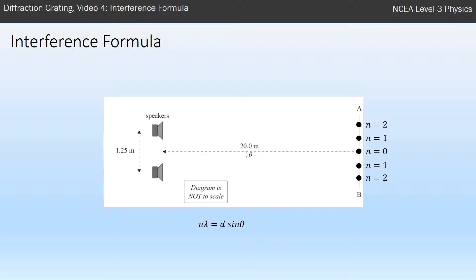So N, we discussed already, was counting which loud spot we're talking about, and then lambda is the wavelength of, in this case would be sound, but could be of light as well.